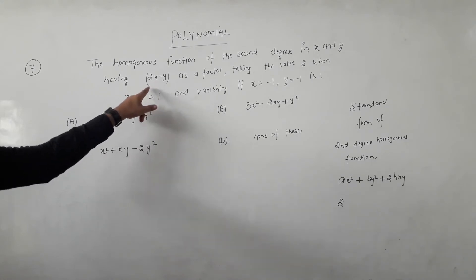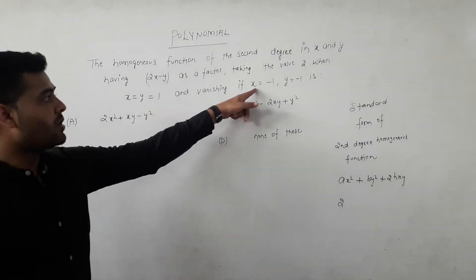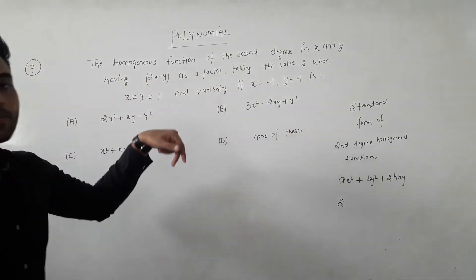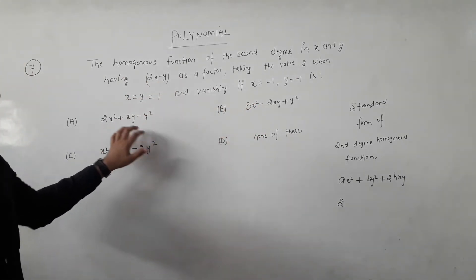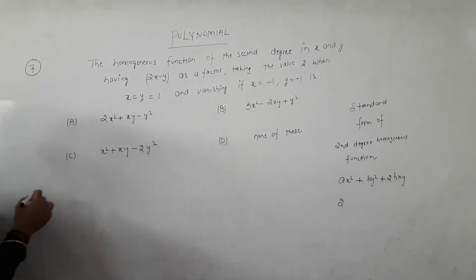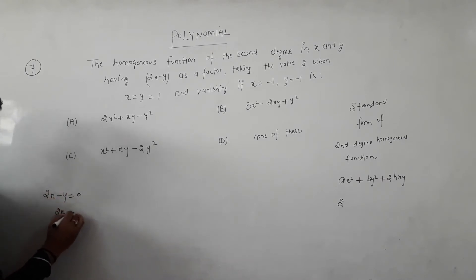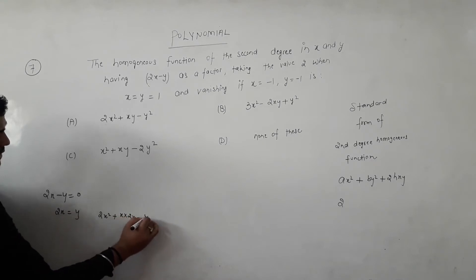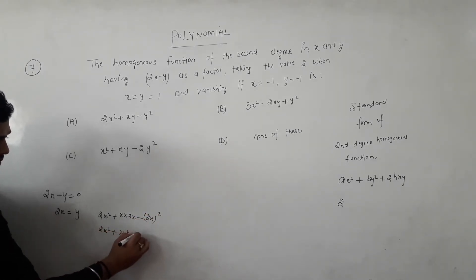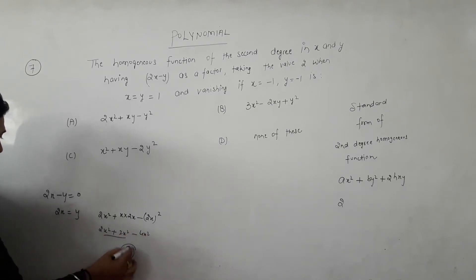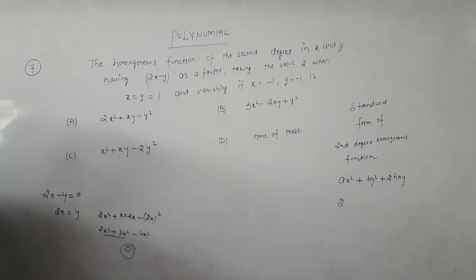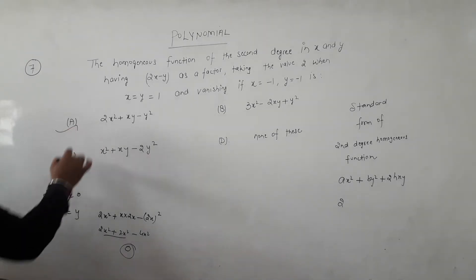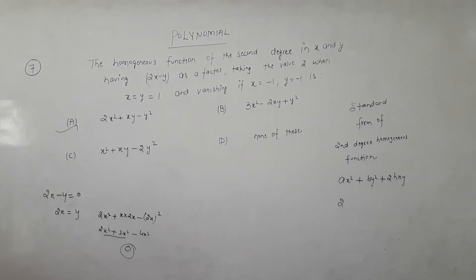When y equals 2x, substituting into the function: 2x² plus 2h(x)(2x) plus b(4x²) equals 0. So 2 plus 4h plus 4b equals 0, giving 4 minus 4 equals 0. The factor condition is satisfied, confirming option A is correct for this secondary homogeneous function.